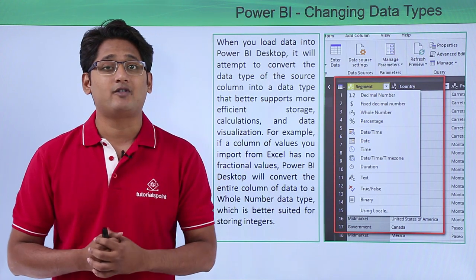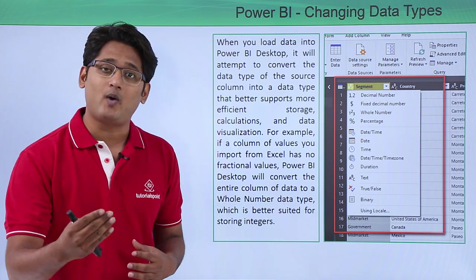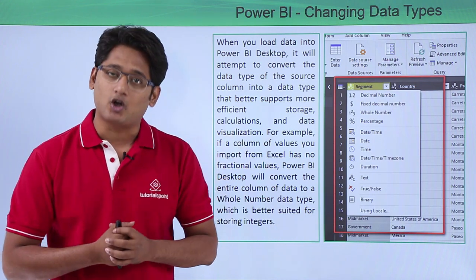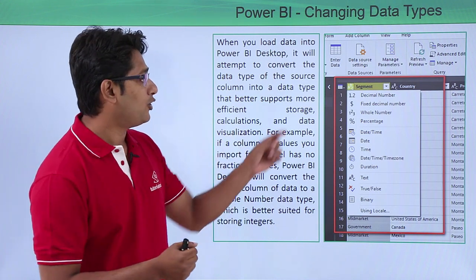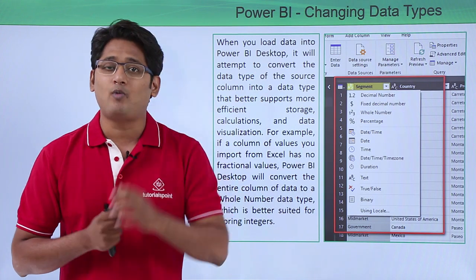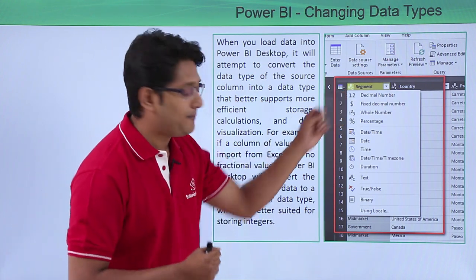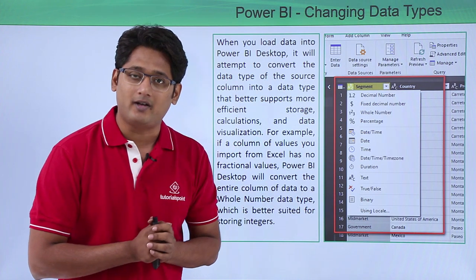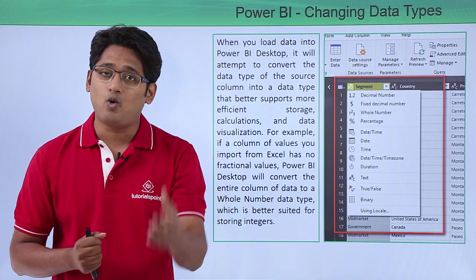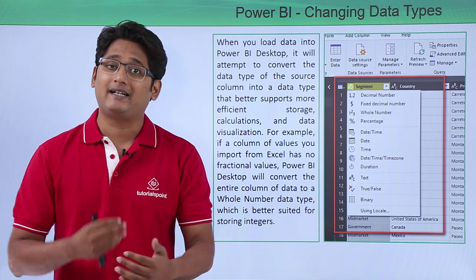Now what are the different types of data types available? Once you are in the Power Query Editor, go to that particular column and click on the very top-left corner. You will see a small icon — if you see 'ABC' written there and click on that button, you will see a whole bunch of options for data types.